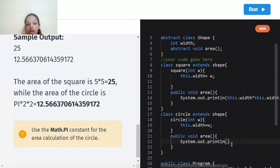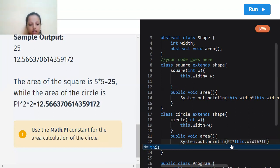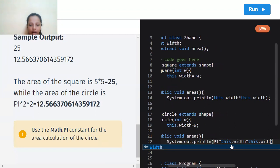And here we're going to use it with the formula which is pi into width into width. So pi into this dot width into this dot width.